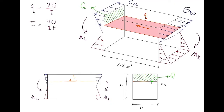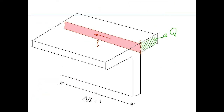Now I want to extend this concept to more complicated cases: thin-walled elements. I'll consider a T-shape. The flange is the horizontal element and the web is the vertical part. If I want to determine shear stress in the flange at the intersection of the flange and web, I cut perpendicular to the direction of the flange, so in a vertical direction.